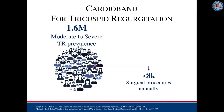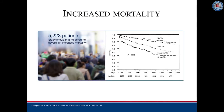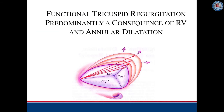We are now going to change directions and talk about tricuspid regurgitation. As mentioned previously, TR is extraordinarily common and only a very small minority of patients with significant tricuspid regurgitation are treated surgically. Tricuspid regurgitation is clearly associated with increased mortality, and the majority of TR is functional in etiology — a consequence of RV and annular dilatation.